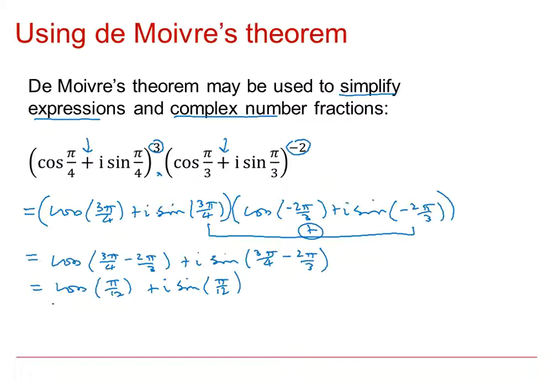And if you work these out accurately with a calculator, you can get this as root 6 plus root 2 over 4 plus root 6 minus root 2 over 4 lots of i. So it looks a little bit awkward, but that is the component form.